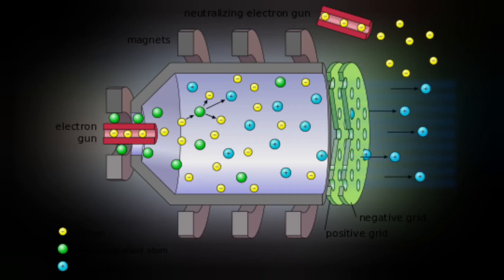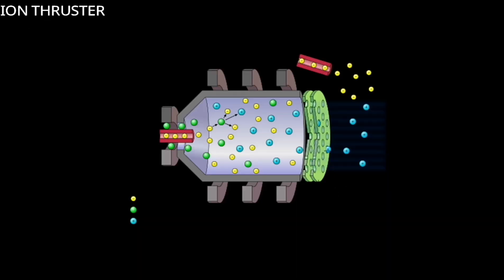A very high positive voltage is applied to the screen grid, but it is configured to force the discharge plasma to reside at high voltage. As the ions pass between the grids, they are accelerated toward the negative electrode.